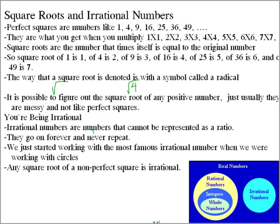Square roots and rational numbers. This one should be quick. Perfect squares are numbers like 1, 4, 9, 16, 25, 36, 49, next one, 64.